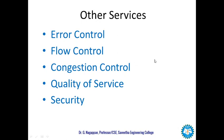Flow control regulates the amount of data a source can send without overwhelming the receiver. If the upper layer at the source produces data faster than the upper layer at the destination can consume it, the receiver will be overwhelmed. To control this, the network layer maintains flow control using buffers to manage the data flow.